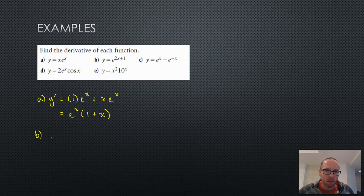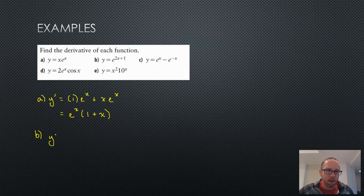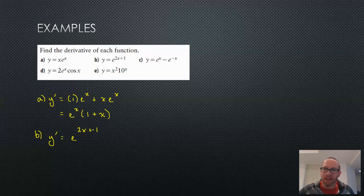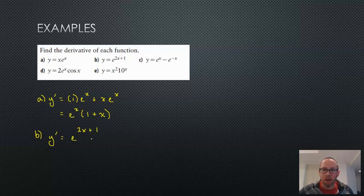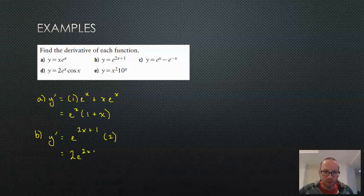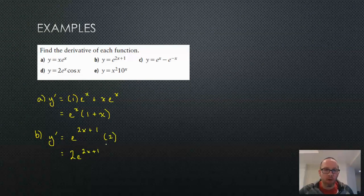For part B, we have an exponential function where the exponent is a function itself, so we'll have to use the chain rule. The derivative of that exponential function is itself. Because the base is e, I don't need to multiply by ln e — I know that ln e is 1. So just e to the power of 2x plus 1, and I multiply by the derivative of what's in the exponent, which is just 2. So 2e to the power of 2x plus 1.